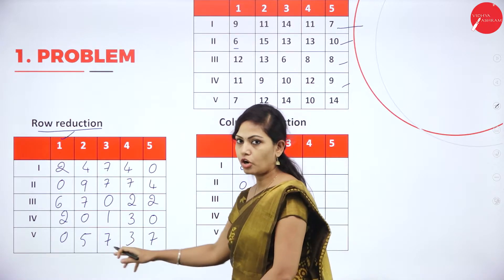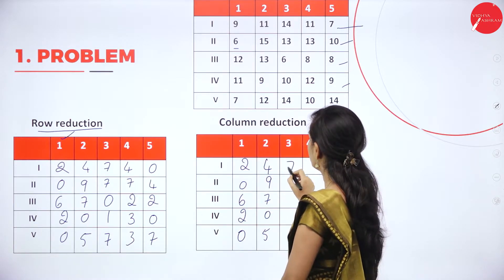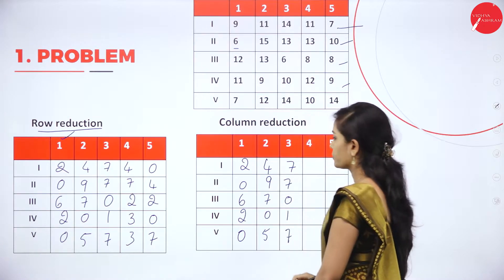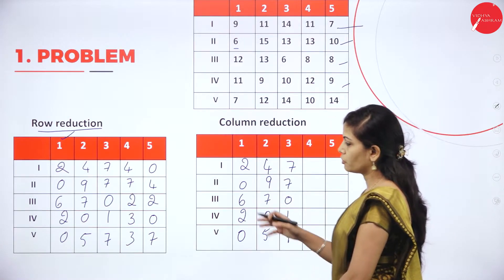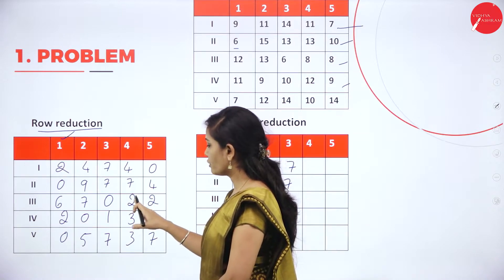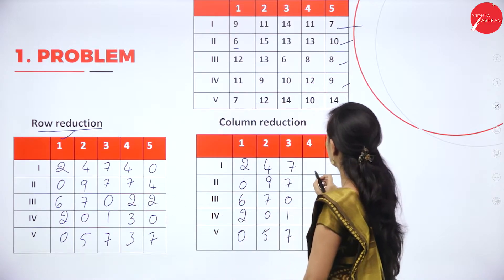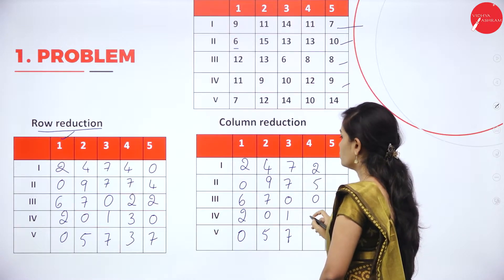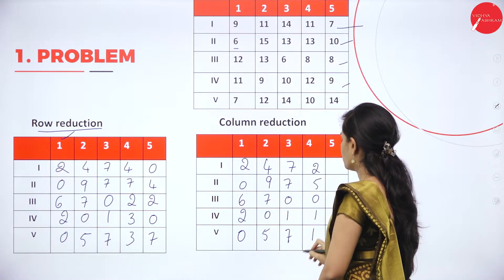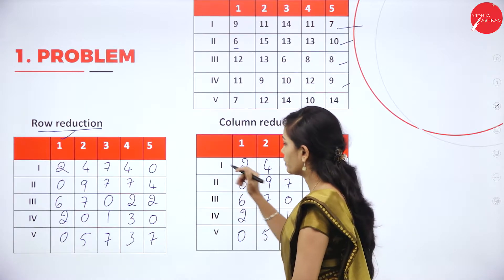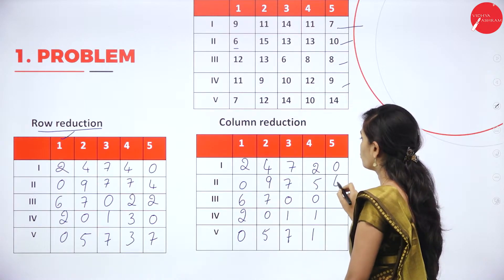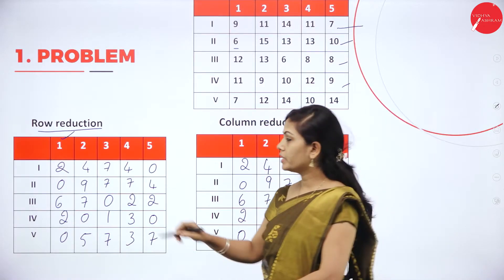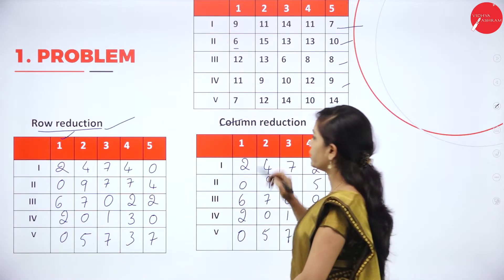In the third column we also have 0, giving values: 7, 7, 0, 1, 7. In the fourth column we do not have a 0; the least value is 2. So 4 minus 2 is 2, 7 minus 2 is 5, 2 minus 2 is 0, 3 minus 2 is 1, 3 minus 2 is 1. In the last column we have 0, giving values: 4, 2, 0, 2, 0, 7. Row reduction and column reduction are now finished.